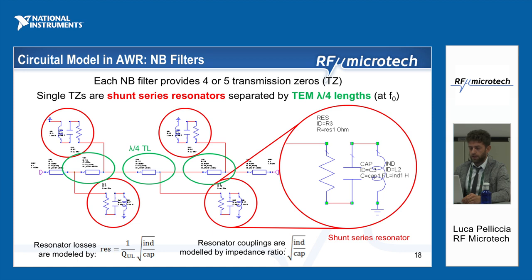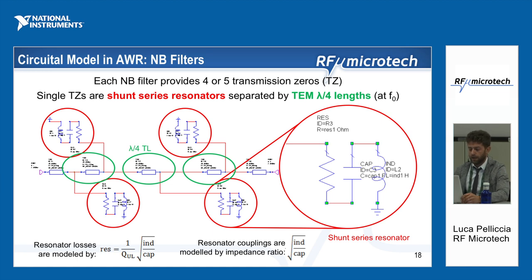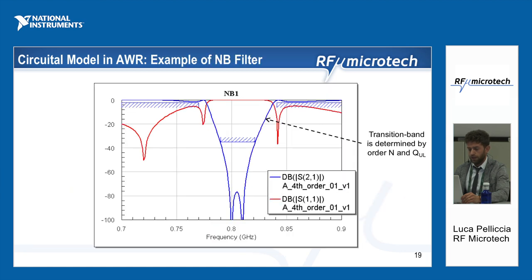The four resonators are connected via TEM lambda-over-four length transmission lines. The resonator losses are modeled by the resistance of the series resonator. The couplings are modeled by the ratio of the inductance squared over the capacitance of the resonator — the impedance ratio. Here you can see an example of the circuital response of one of the notch band filters.